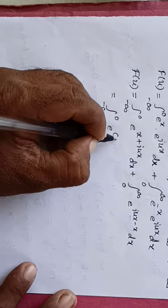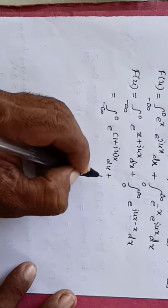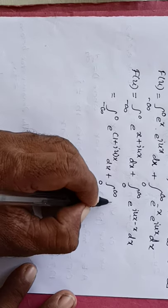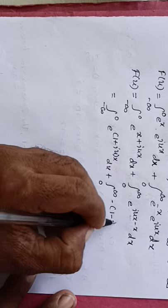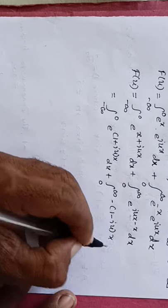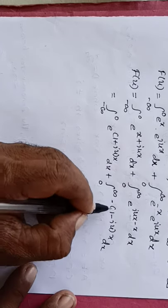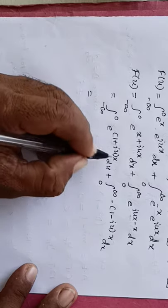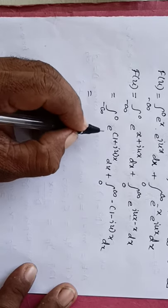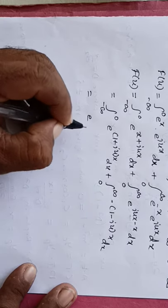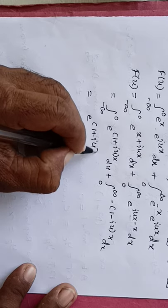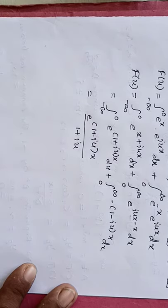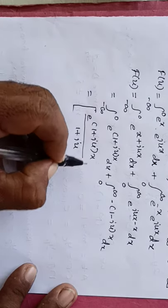Taking x common in the exponents: integration from minus infinity to 0 of e raised to x(1 + iu) dx, plus integration from 0 to infinity of e raised to x(iu minus 1), which equals minus(1 minus iu)x dx. Evaluating these integrals, we divide by the respective constants: 1 plus iu and minus(1 minus iu).